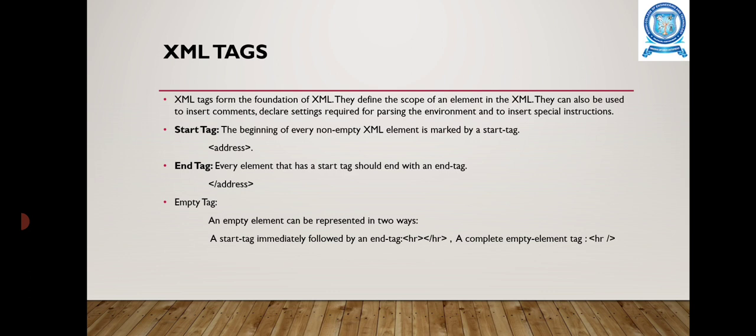XML tags form the foundation of XML. There are three types of tags: first is the start tag, second is the end tag, and third is the empty tag. A start tag marks the beginning of every non-empty XML element, for example an address element. End tags are specified with a forward slash within the angle brackets. An empty element can be represented in two ways: a start tag immediately followed by an end tag.